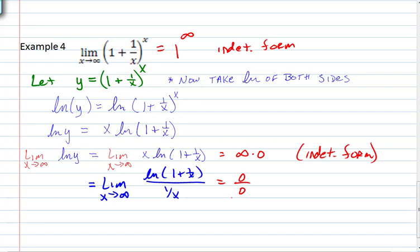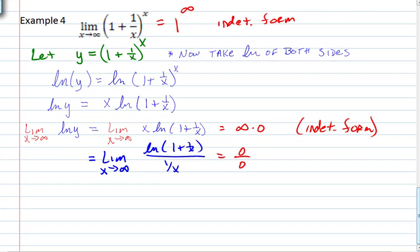That's the indeterminate form we're more comfortable with. How did we know to take the natural log of both sides? Experience. If you have a variable in the exponent, you need the power rule to bring it down, and natural log is a one-to-one operation — you can apply it to both sides without changing anything. This is called a logarithmic transformation, and it's a common technique in mathematics.